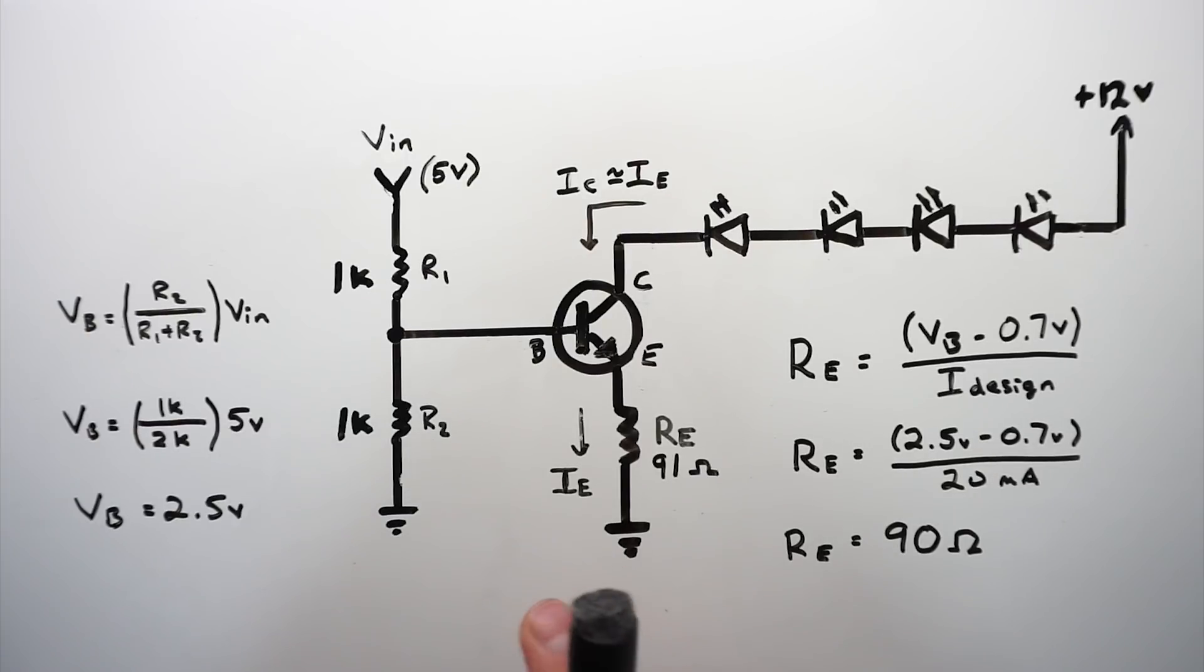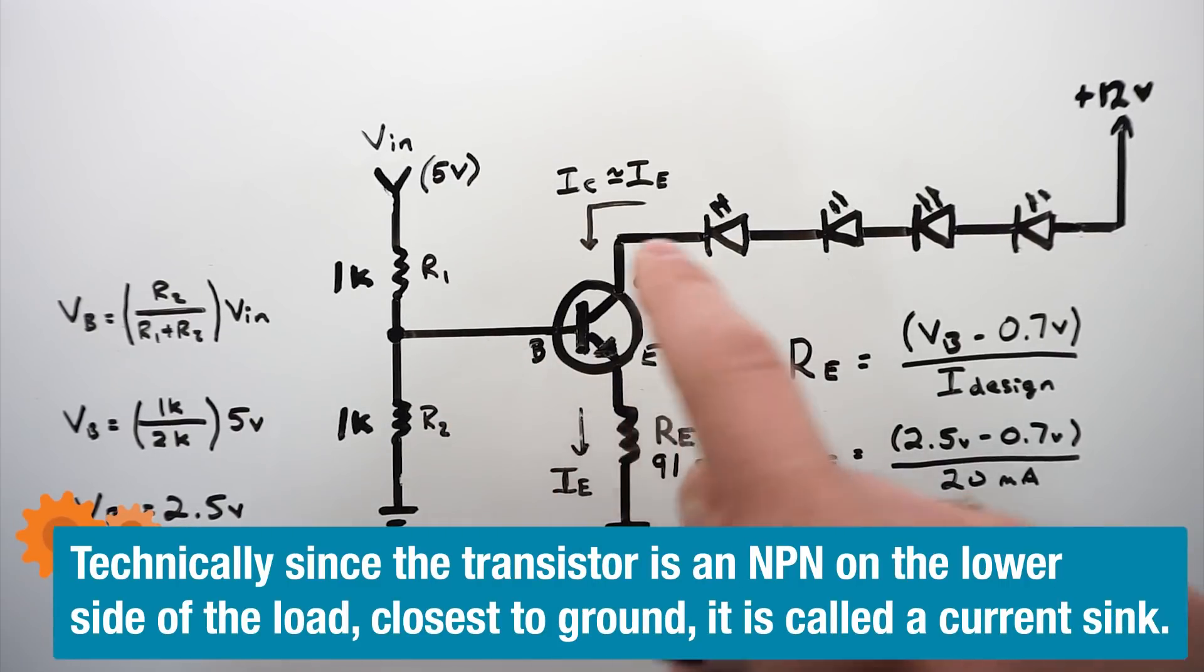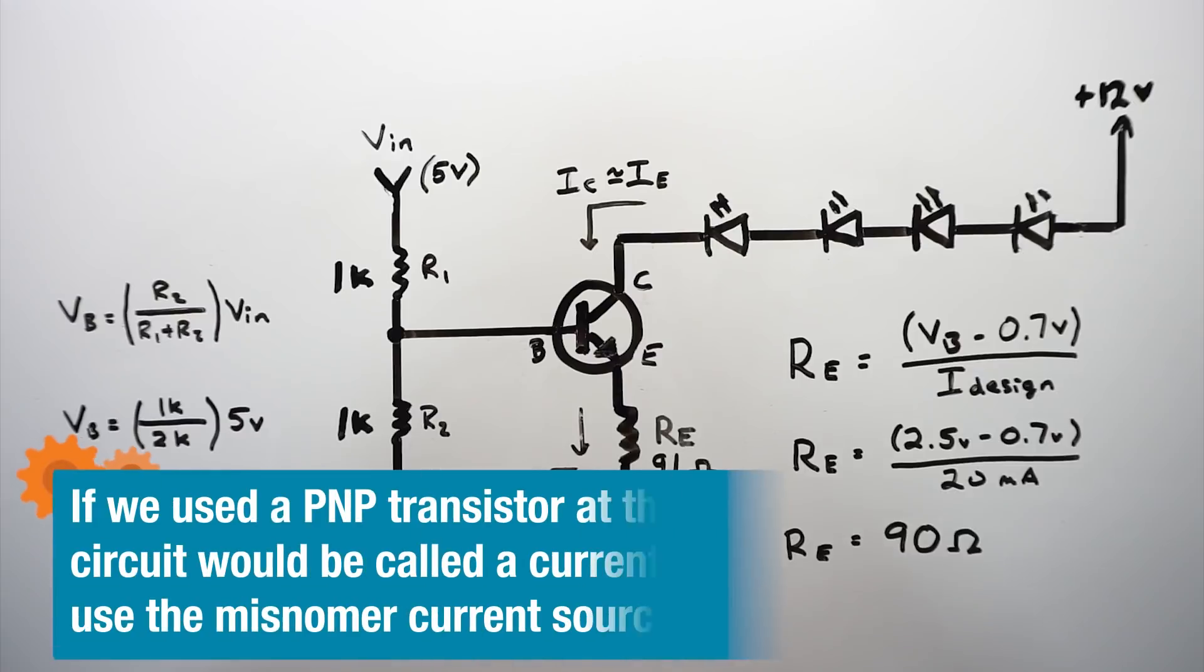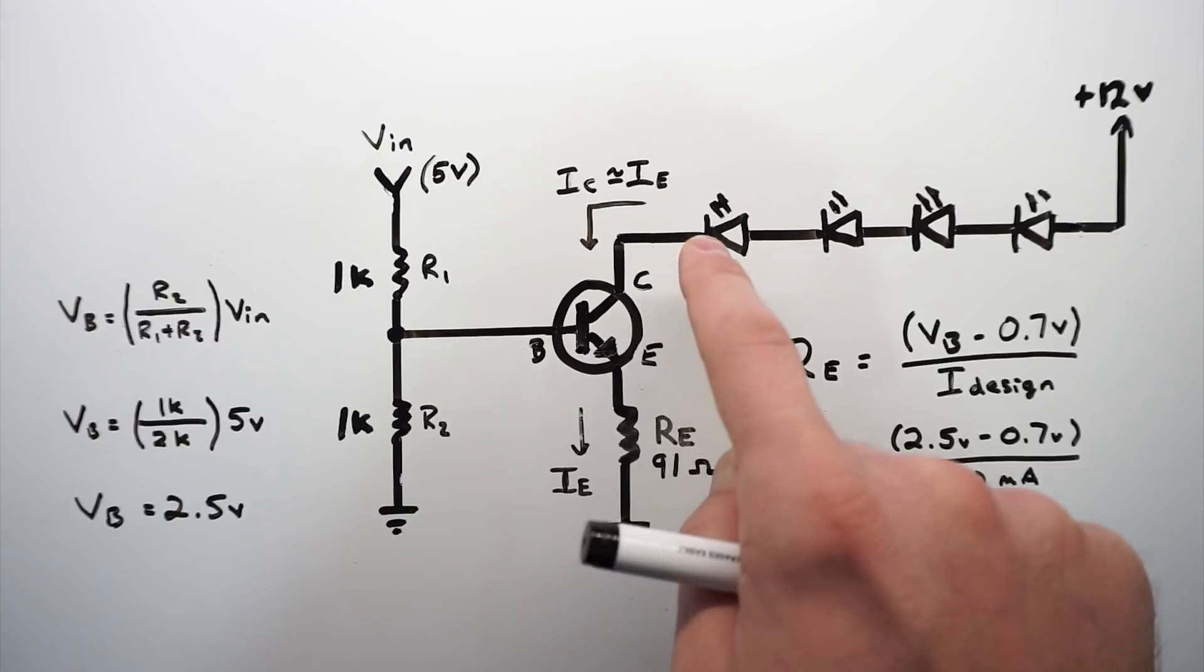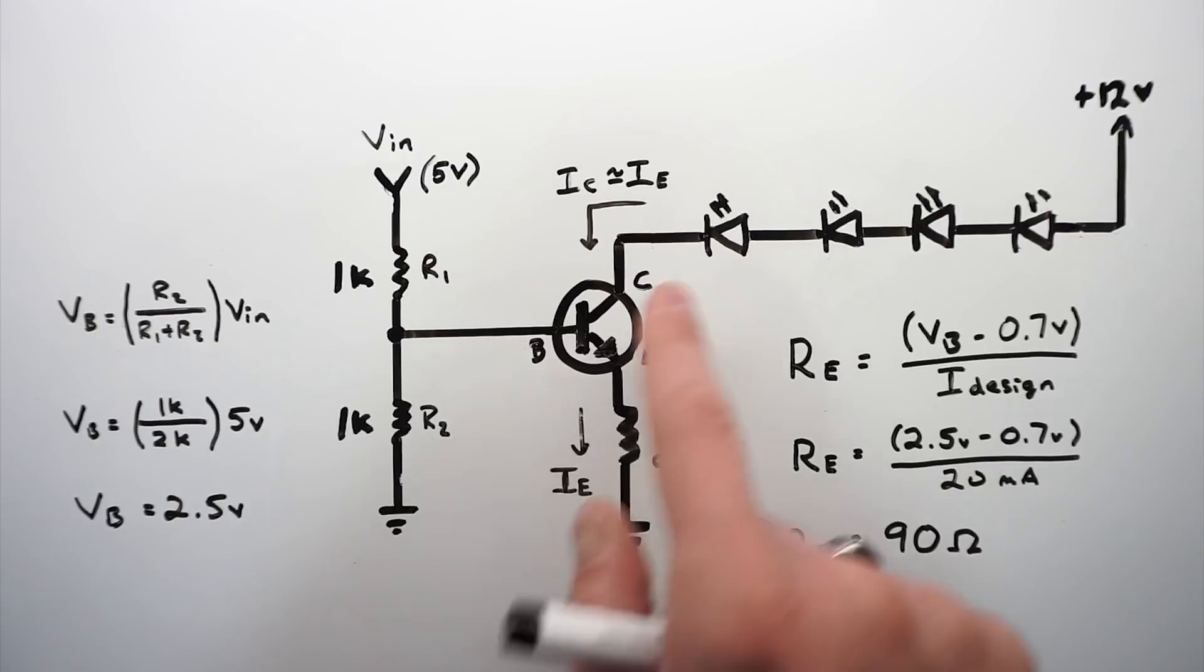Bipolar transistors like the 2N3904, which we're going to use in this demonstration, can be used as a current source if we forward bias the base emitter junction of the transistor and reverse bias the base collector junction of the transistor. And we do that by applying a more positive voltage at the base than the emitter, greater than 0.70 volts. That's how we forward bias this internal diode. And we apply a more positive voltage on the collector than the base to reverse bias this junction of the transistor, the base collector.